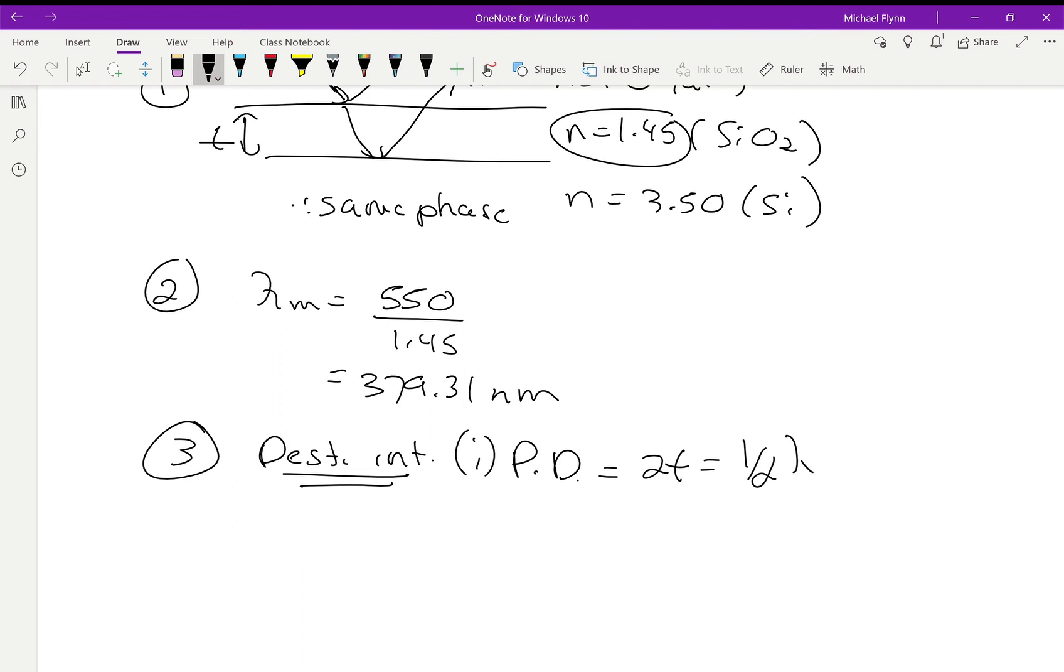Now, there are other cases. If I go three halves of a wavelength, but it has to be odd multiples of a half of a wavelength. Okay. One half, three halves, five halves, seven halves, and so on. Because they start out in step, we need to make them out of step to get destructive interference.